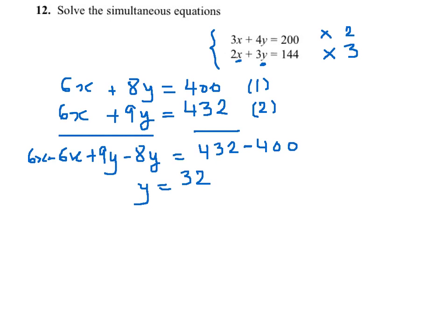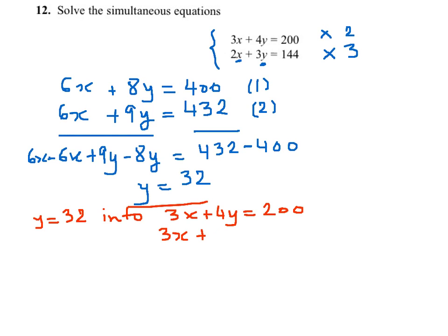Now I will substitute the value of y equals 32 into one of the equations in order to work out the value of x. So substituting y equals 32 into equation 2, which is 3x plus 4y equals 200, I get 3x plus 4 times 32 equals 200. This gives me 3x equals 200 take away 4 times 32, which is 128.